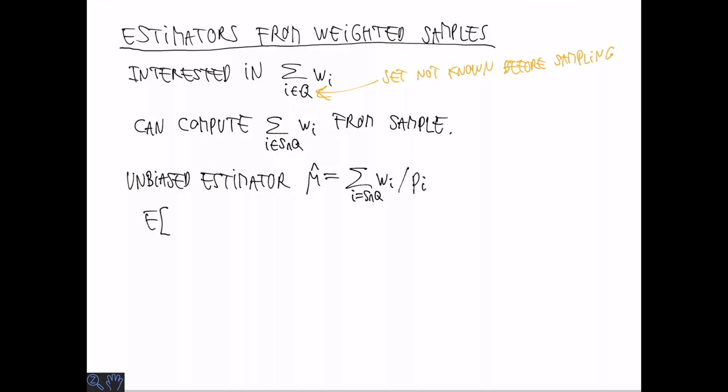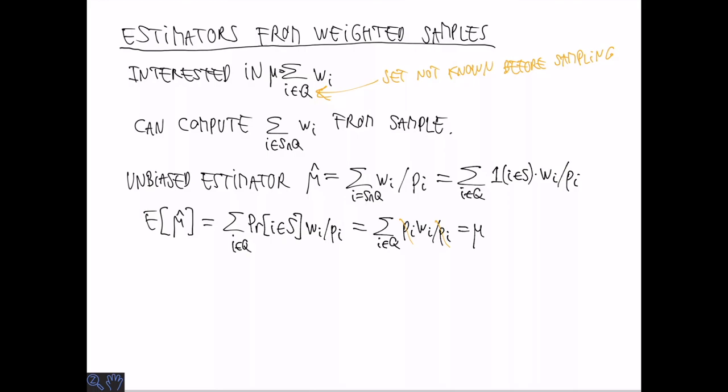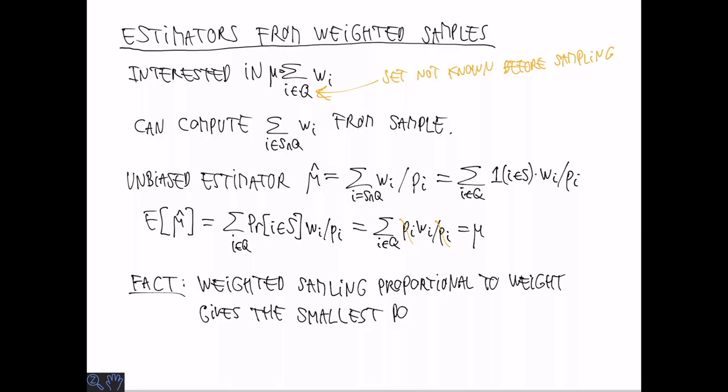Now I claim that the expected value of mu hat can be written as a sum over all i of the probability that i is in the sample multiplied by wi over pi. So this is a sum over all items in Q. So why is that? Well, to see this, write the definition of mu hat in a different way. We sum over all i in Q, an indicator variable that i is in s multiplied by wi over pi. The expected value of the indicator variable is exactly the probability that i is in s. Altogether, this means that the expected value of mu hat is exactly mu. And we can use mu hat as an unbiased estimator.